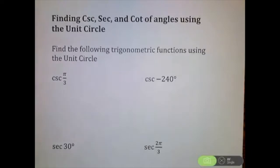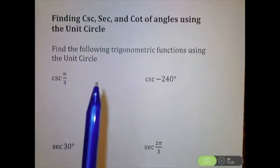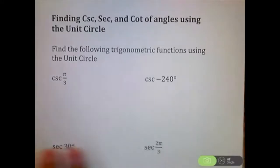Hey guys, I'm going to find cosecant, secant, and cotangent of various angles using the unit circle. I already have one video out there where I find sine, cosine, and tangent using the unit circle. If you have not seen that, I highly recommend watching that first because I'm going to move a little bit faster on this one because we are building here.